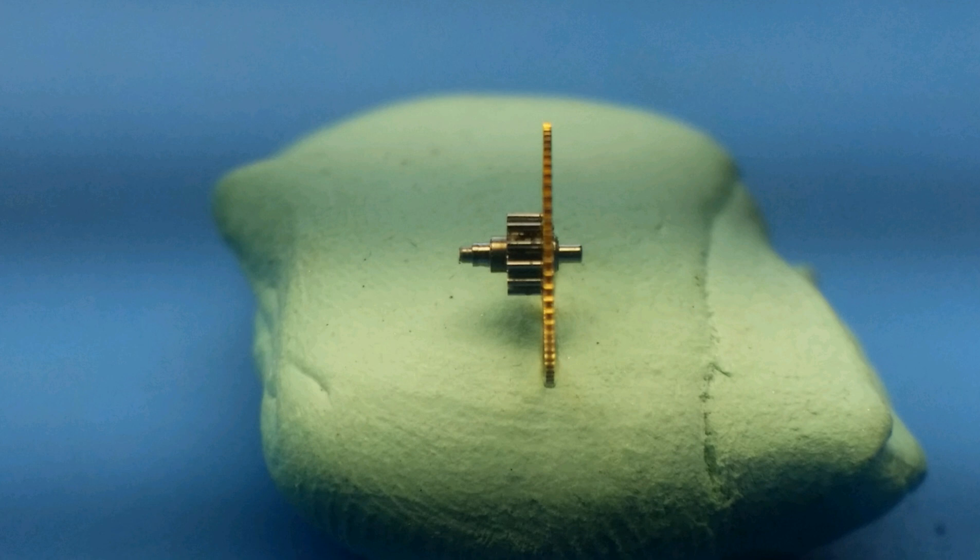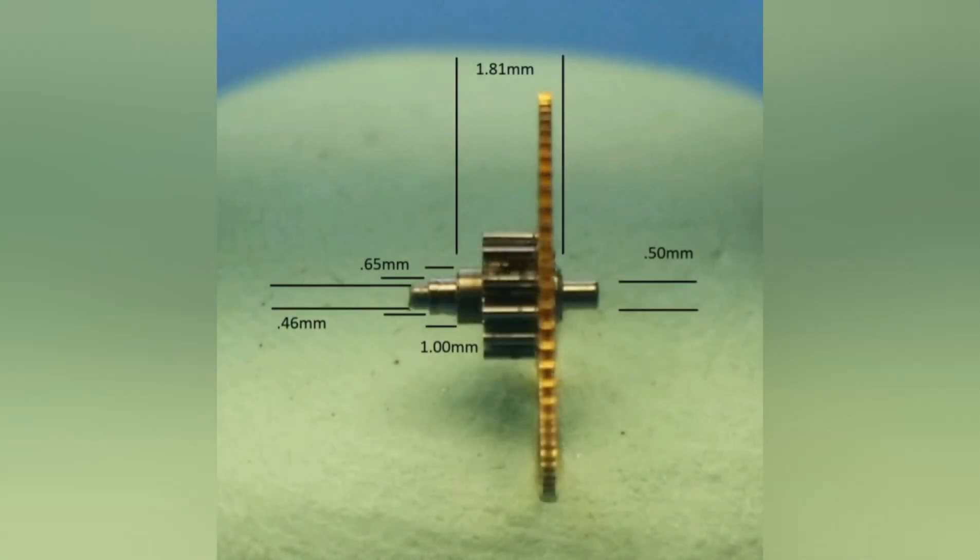But before we start, what we need to do is get proper measurements of lengths and diameters. This picture here shows that the back pivot is 0.50 millimeters and the front pivot is 0.65 millimeters.